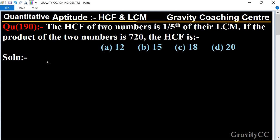the product of the two numbers is 720, the HCF is what? So in this question, first of all, we let the LCM. Let LCM be 5x, then